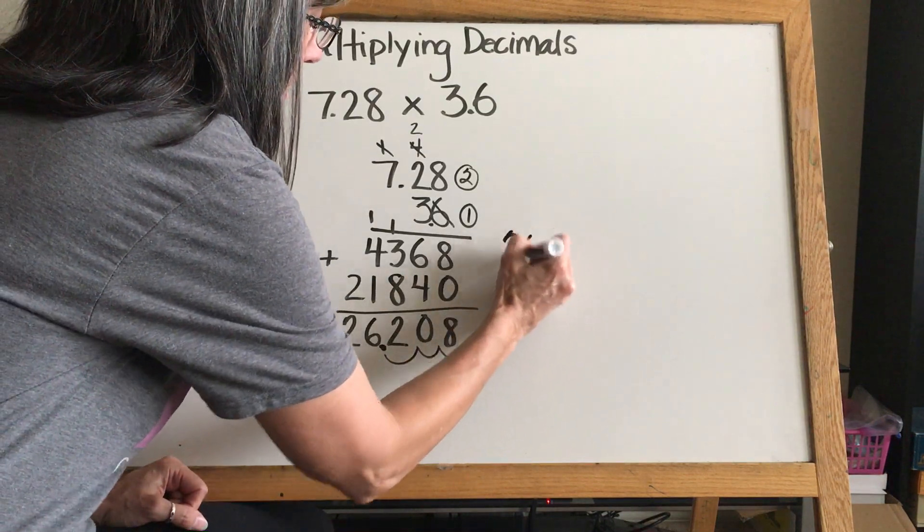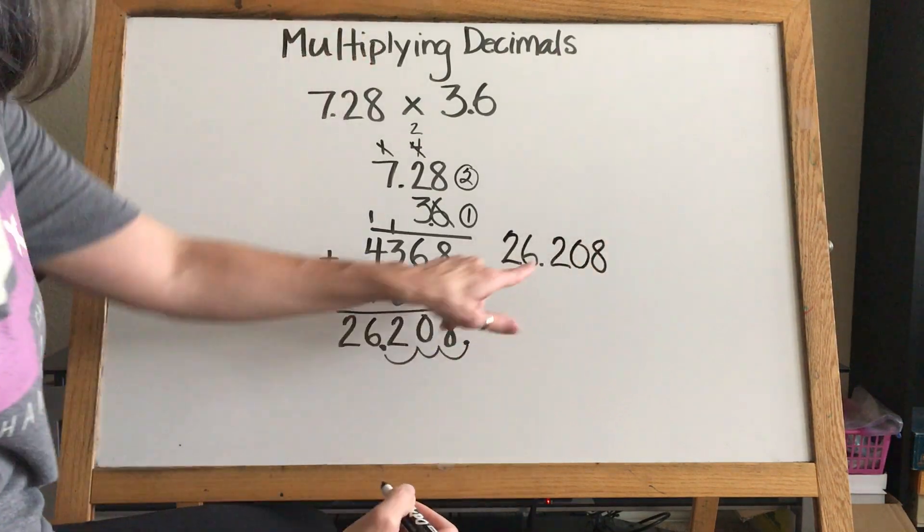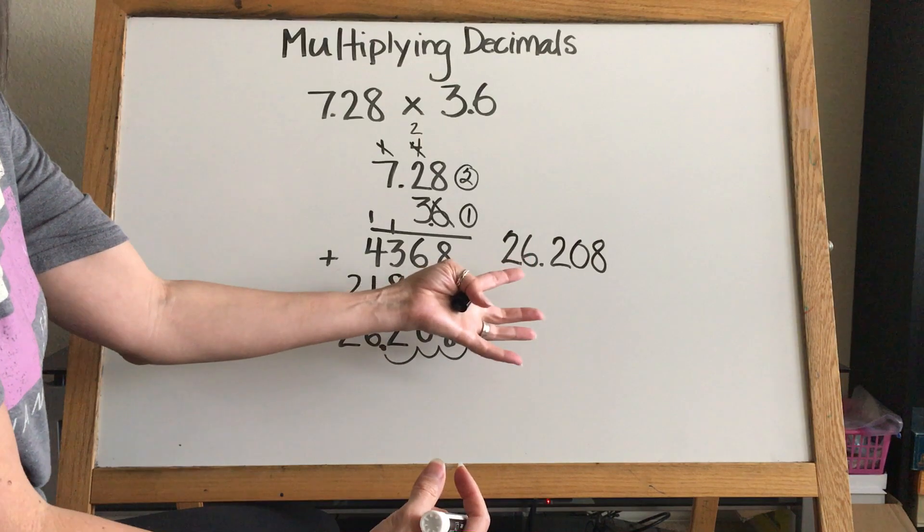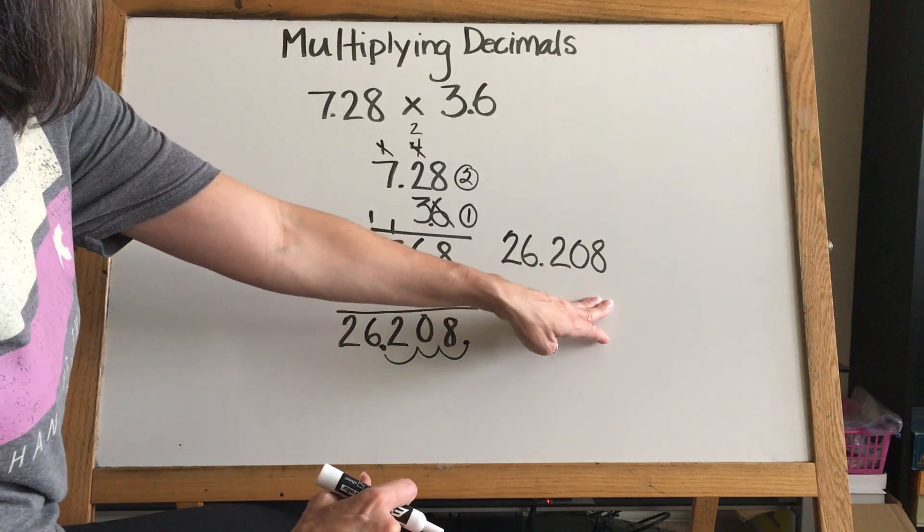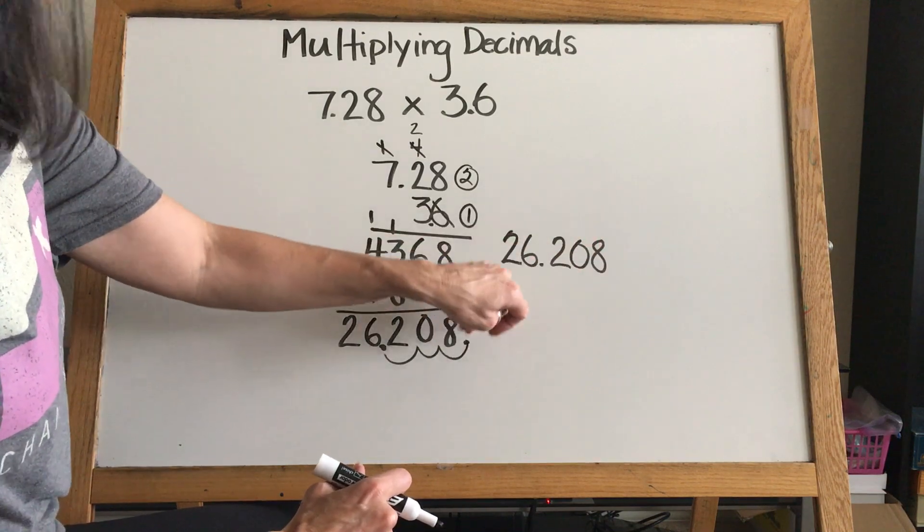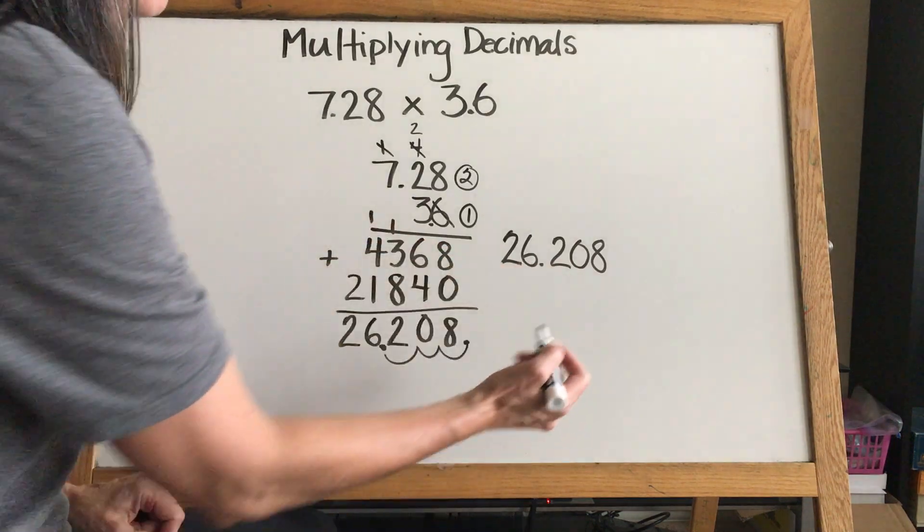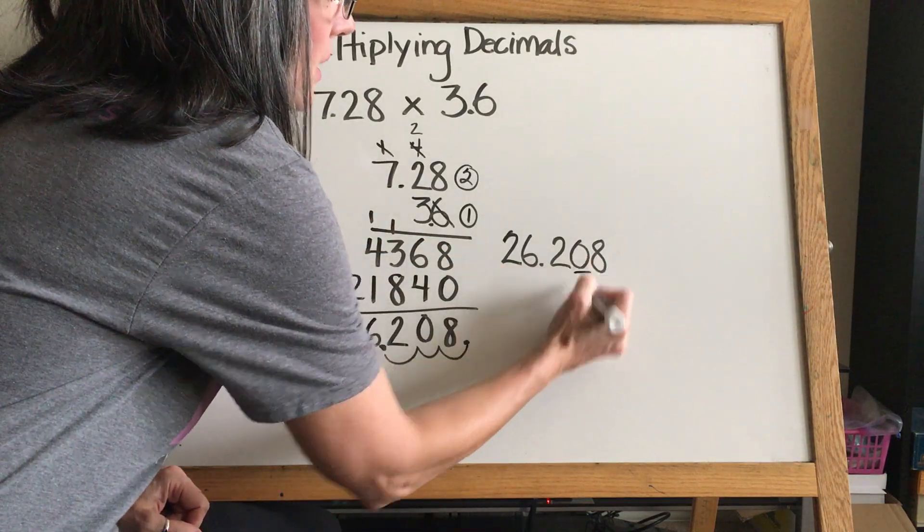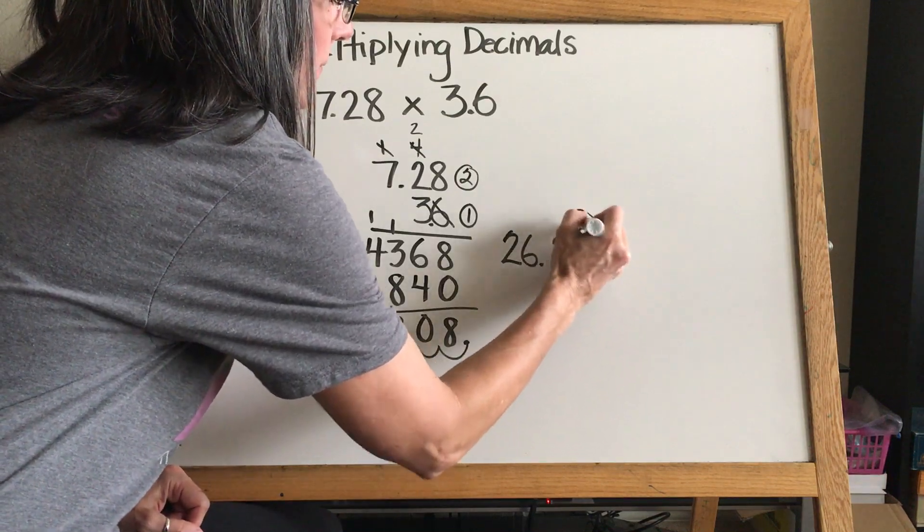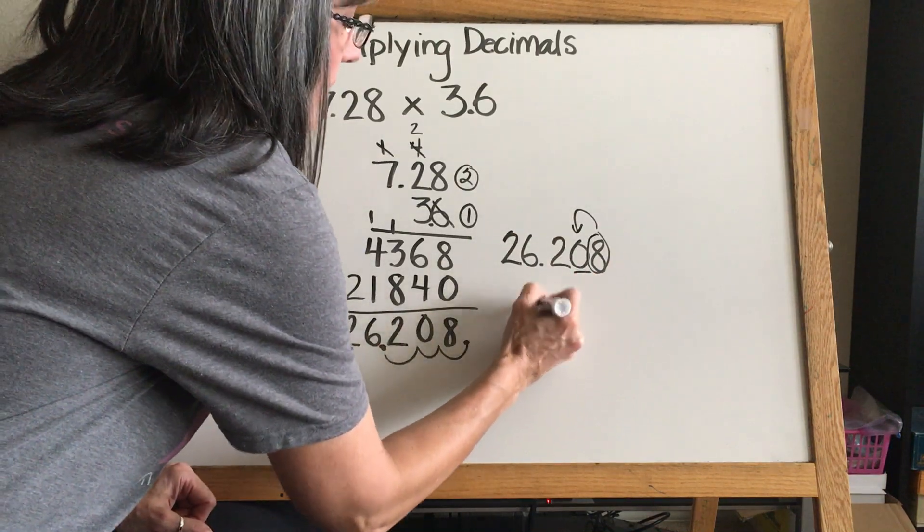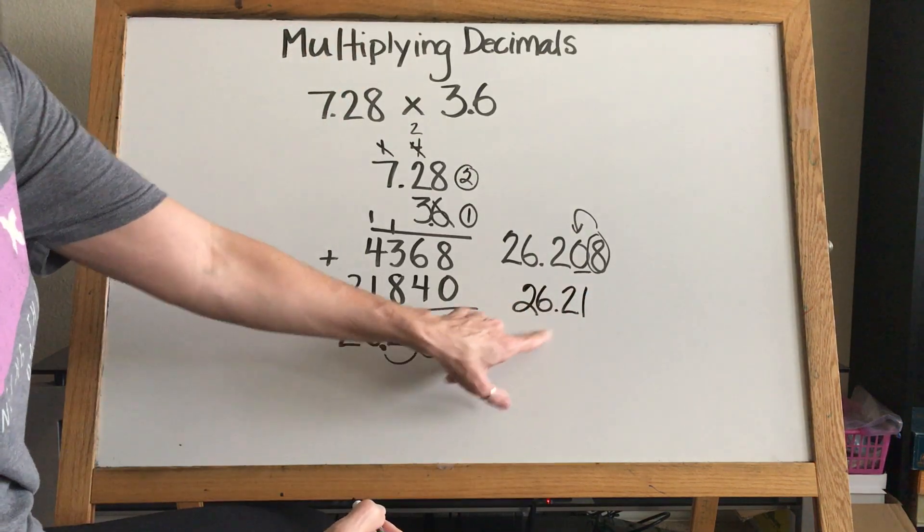Then we're going to look at it and say, is this reasonable? So this number is 26 and 208 thousandths, or if we looked at it as money, we would say 26 dollars and 21 cents, because that eight would round our zero. Remember how we learned to round? If we wanted to round to the penny, we'd underline the penny, we'd circle our eight. Does eight change the zero? Yes. So if we rounded this and turned it into money, it'd be 26 dollars and 21 cents.